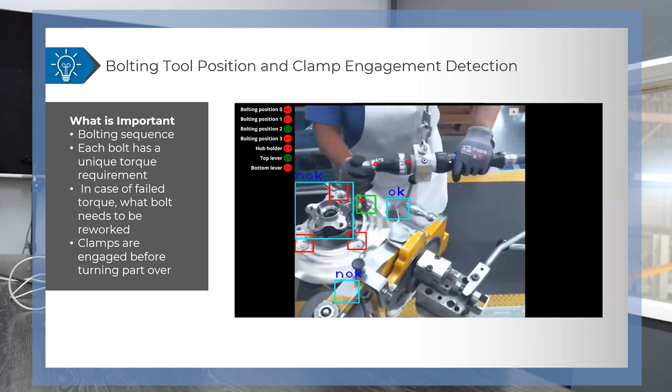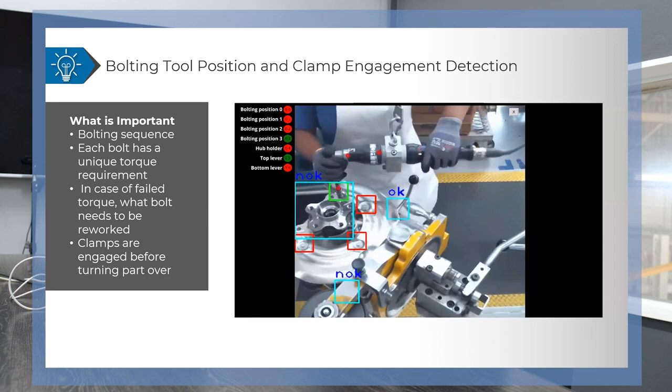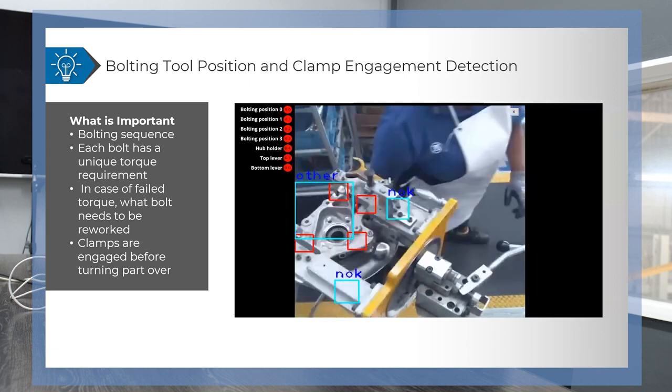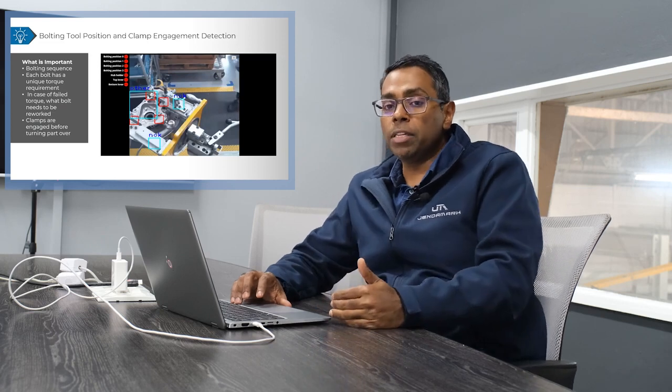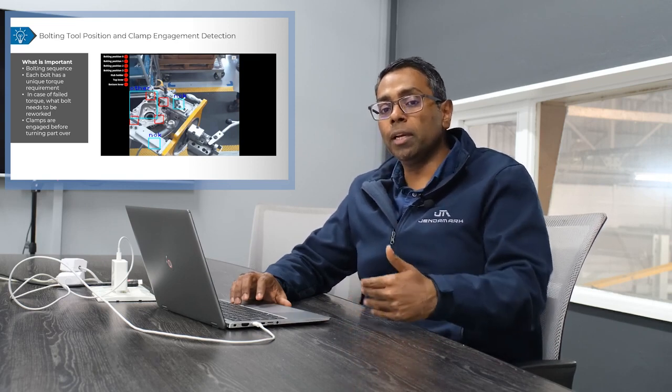Once all the bolts are tightened, we confirm that and display to the operator that it's okay to put the clamp in place and rotate the axle around. We've detected that the clamp is in place and then allow the operator to turn the product around. This has provided significant savings — we ensure quality when tightening, and if one bolt fails we know exactly which bolt to rework rather than disassembling all four, saving a huge amount of rework time.